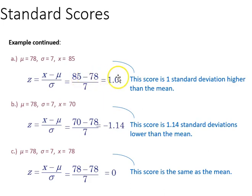The 85 is one standard deviation from the mean, 78 is the mean, so it's zero standard deviations, and 70 is 1.14 away from the mean.